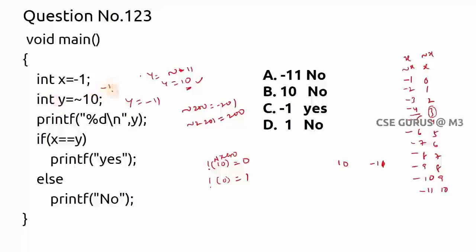So y value is actually minus 11. x value is minus 1 as it is. So print of x and y: y value printed will be minus 11. And if x equals y — is minus 1 equals minus 11? No. So 'no' will be printed. The output will be minus 11 and no. So option A is the correct answer.